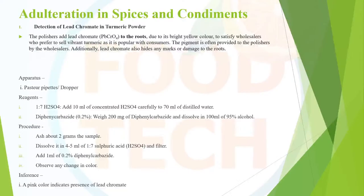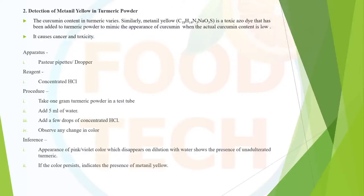Moving to spices and condiments: lead chromate is added to turmeric powder to give it a bright, wholesome color to attract customers, but it is very dangerous to health. Two reagents used are HNO3/H2SO4 and diphenylcarbazide reagent. A pink color indicates the presence of lead chromate. Metanil yellow is also used as a colorant to mimic the appearance of curcumin, but it is toxic and may cause cancer in humans. Pink or violet color in the solution indicates the presence of metanil yellow in turmeric.